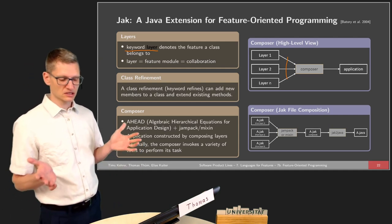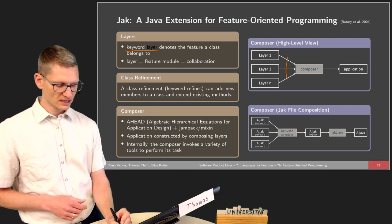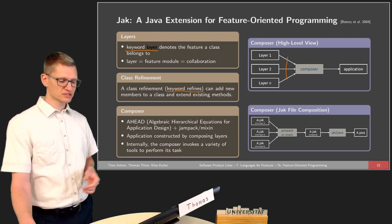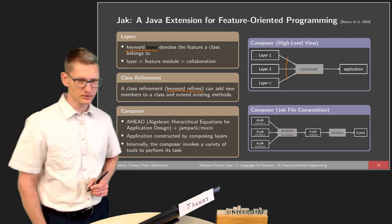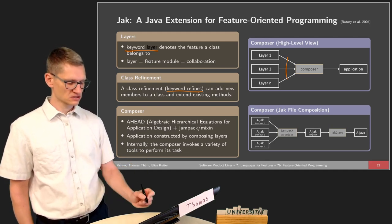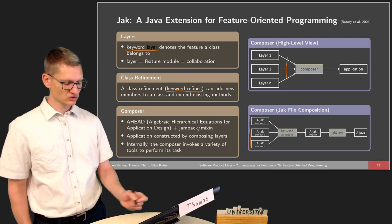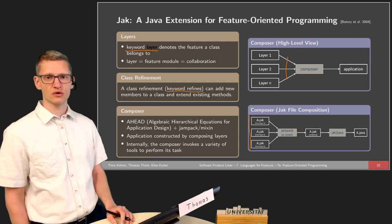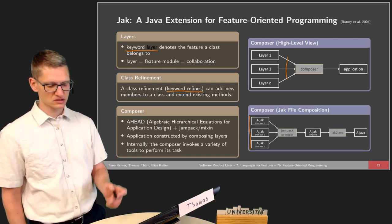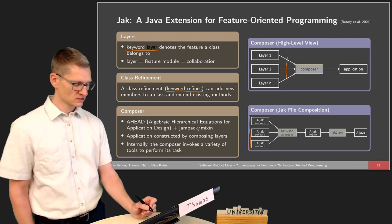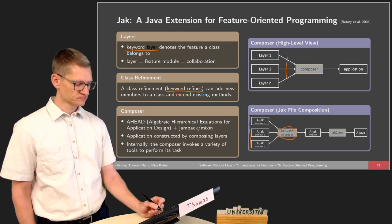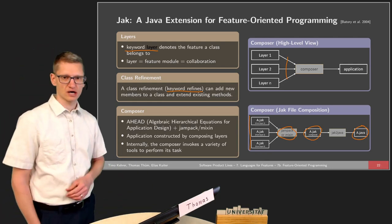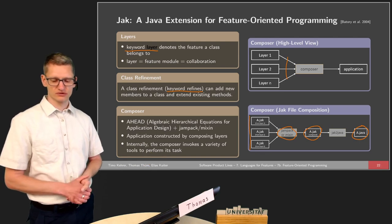The keyword 'layer' is used to indicate what layer a defined class belongs to — similar to a package, but we'll see what is different. Class refinements are indicated by the keyword 'refines', and those refinements can add new members to a class and extend existing methods. The basic principle in the AHEAD approach uses a special new format called JAK (short for Jakarta) — an extension of Java for feature orientation with additional keywords like 'layer' and 'refines'. This is then combined by one of two techniques into a composed form and translated by a tool into an actual Java program.